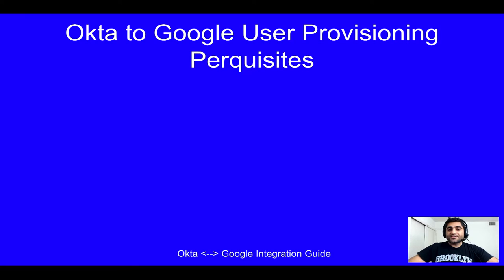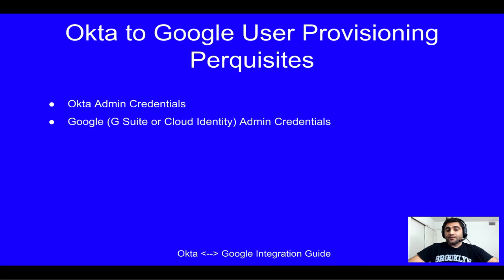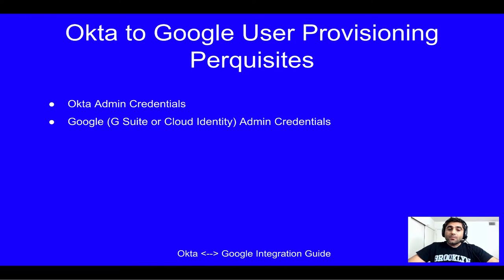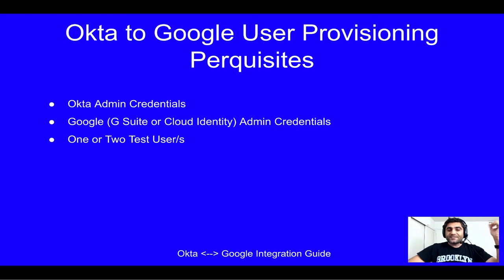A couple of system requirements: you should obviously have Okta admin credentials to log in and do the application setup. On the other side, you should also have your G Suite or Google Cloud Identity admin credentials. Super admin is not required, but ideally you should have user management permission for that user. You should also have one or two test users, because before enabling it for the whole domain in production, we'll ideally test with a couple of users first, and once they're provisioned fine we'll go ahead and scale it and make provisioning based on a Google group created in AD.